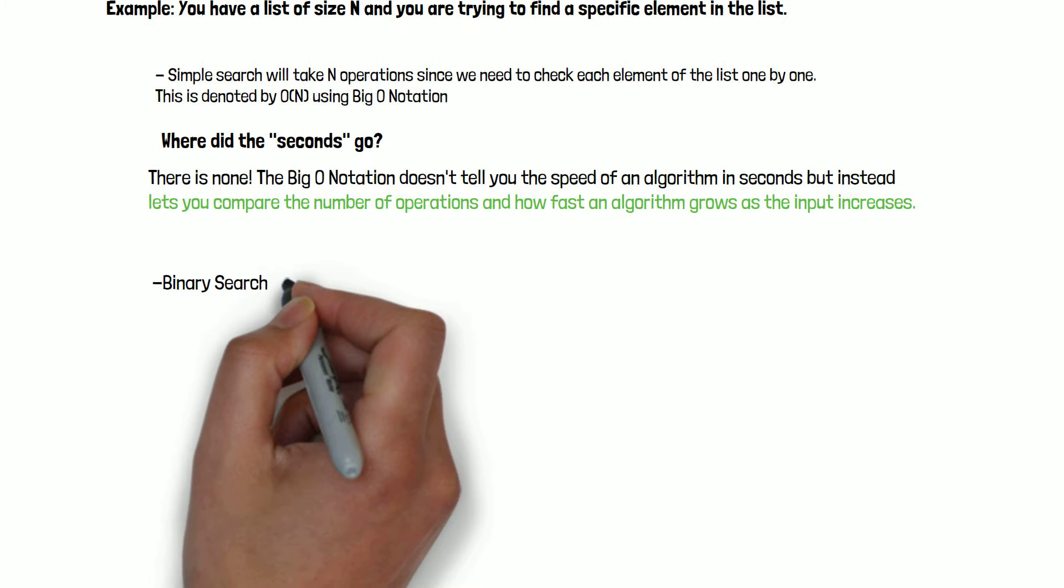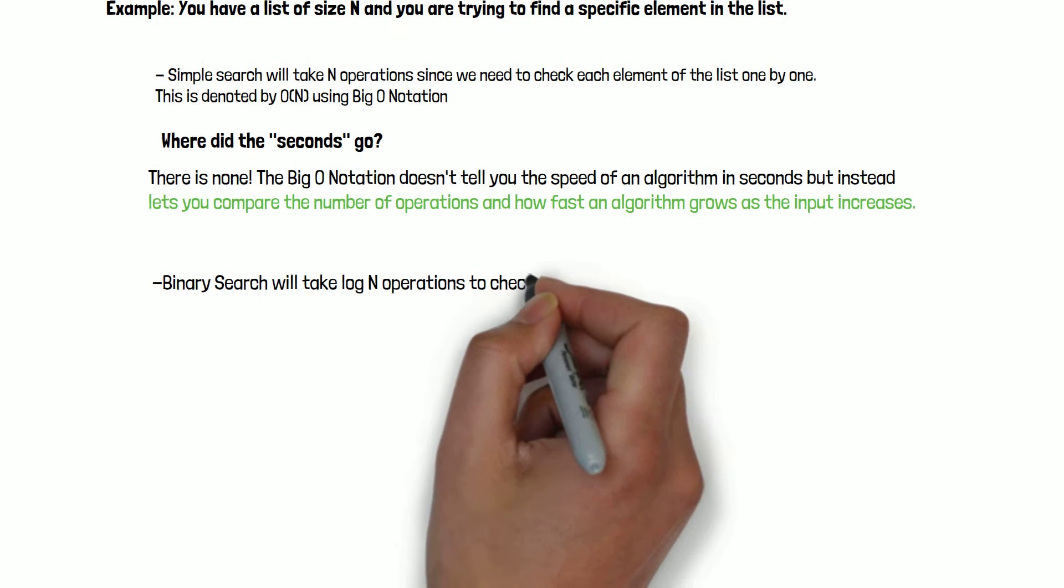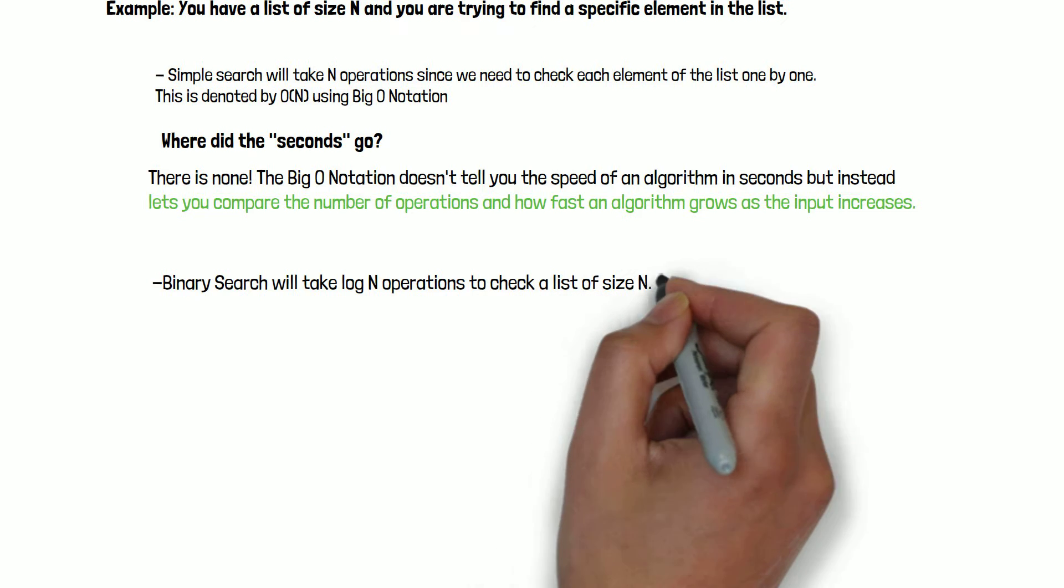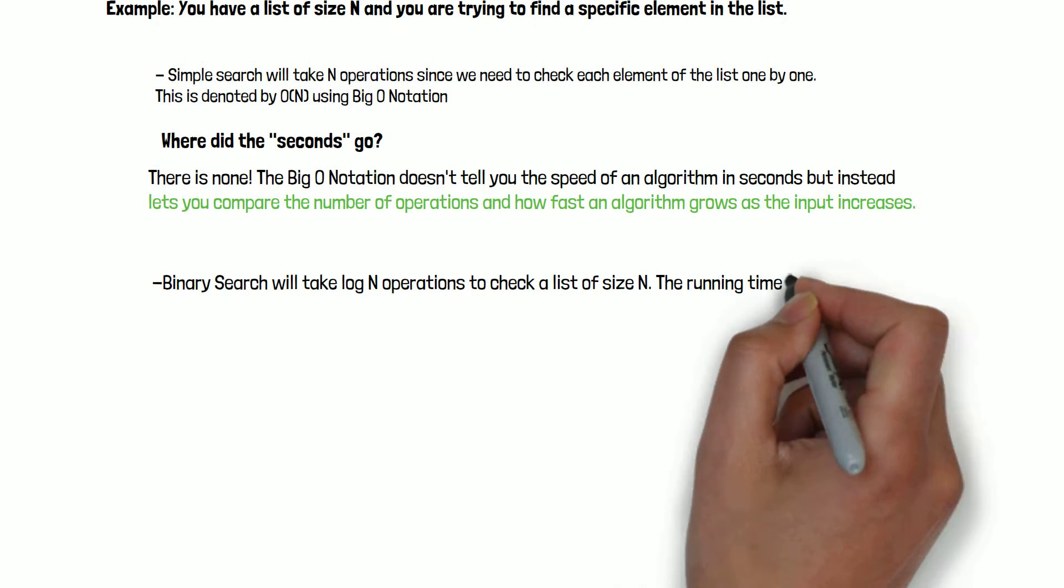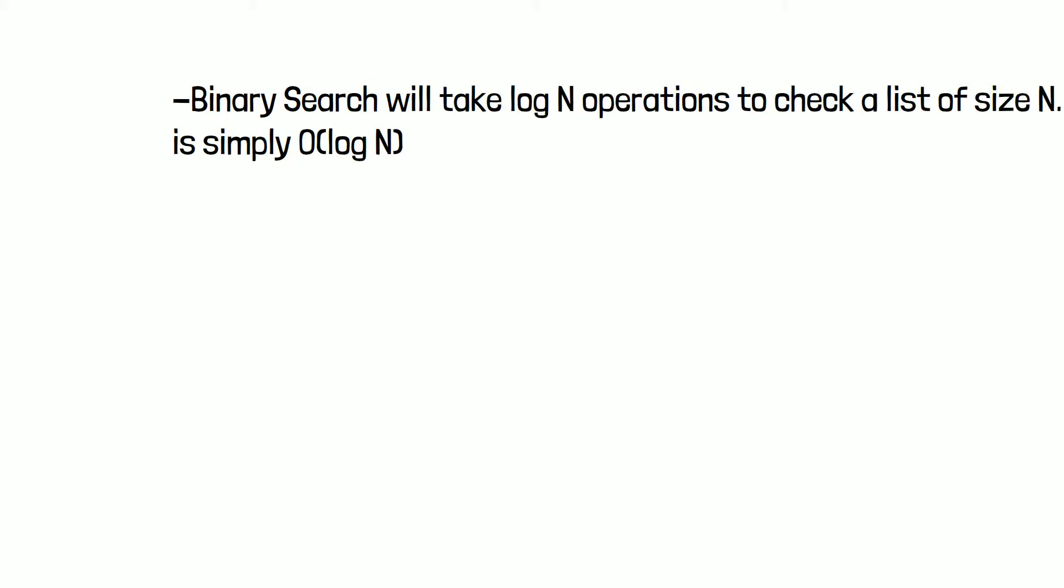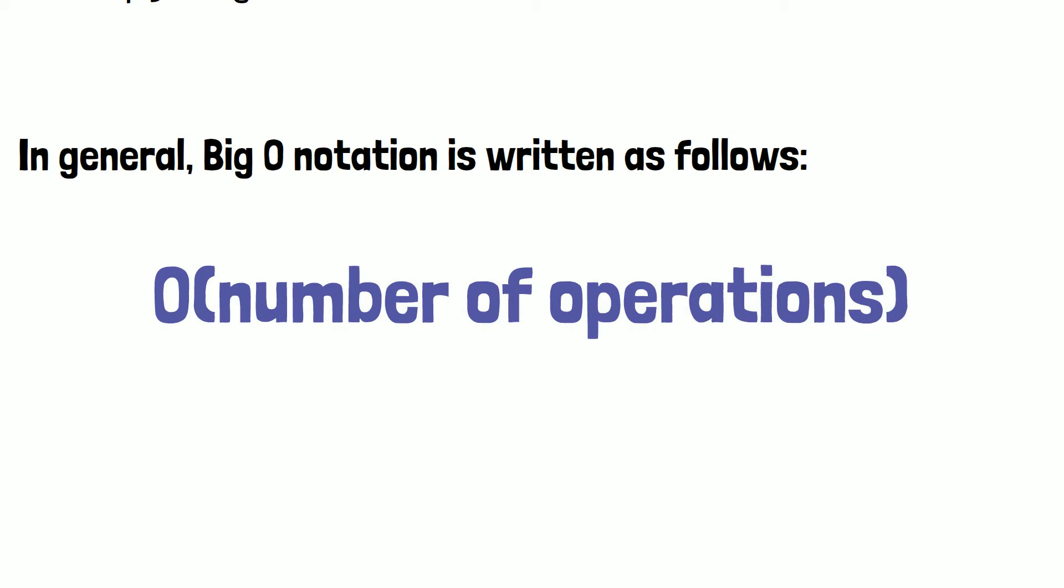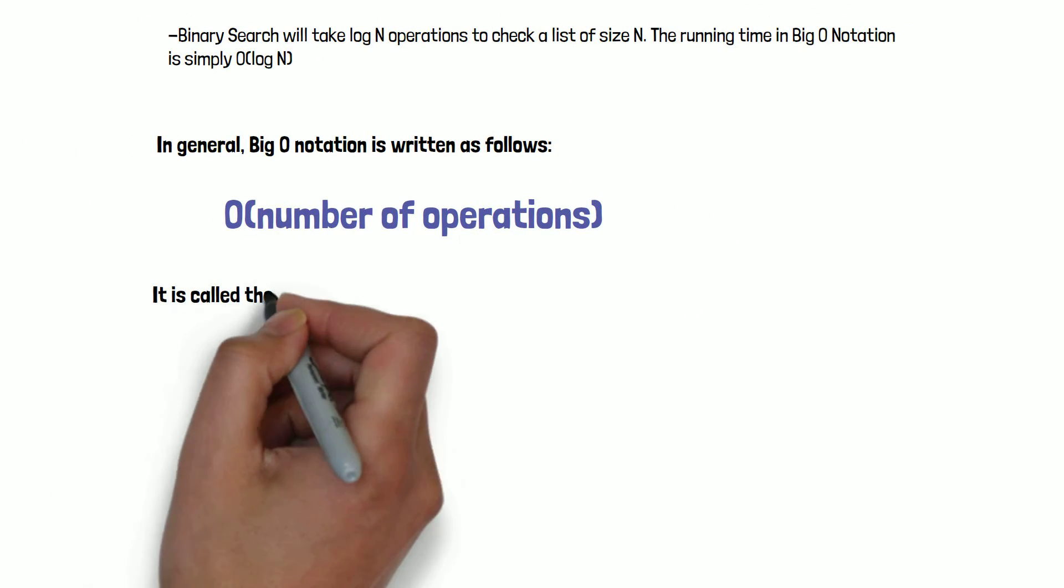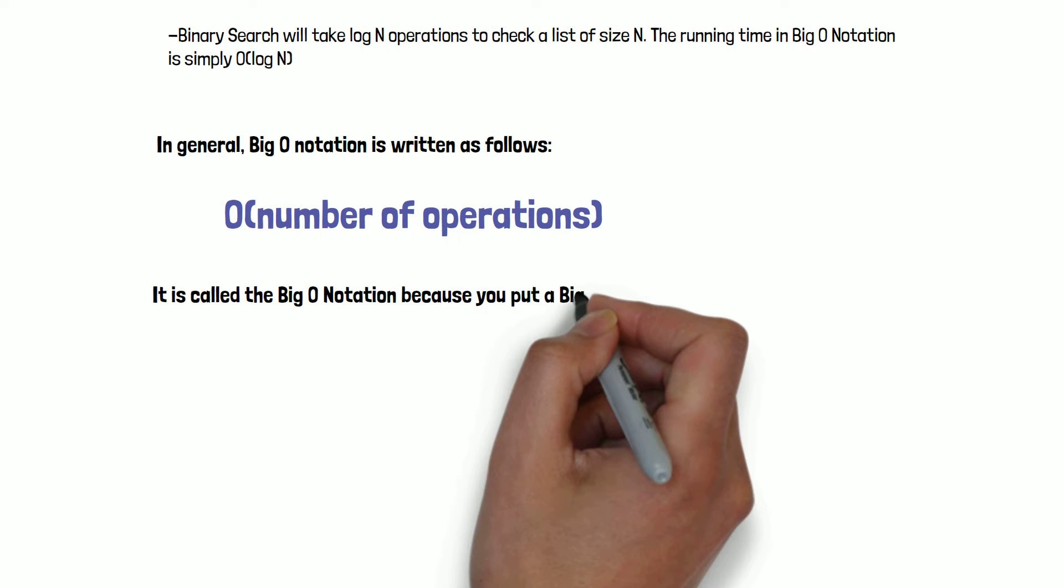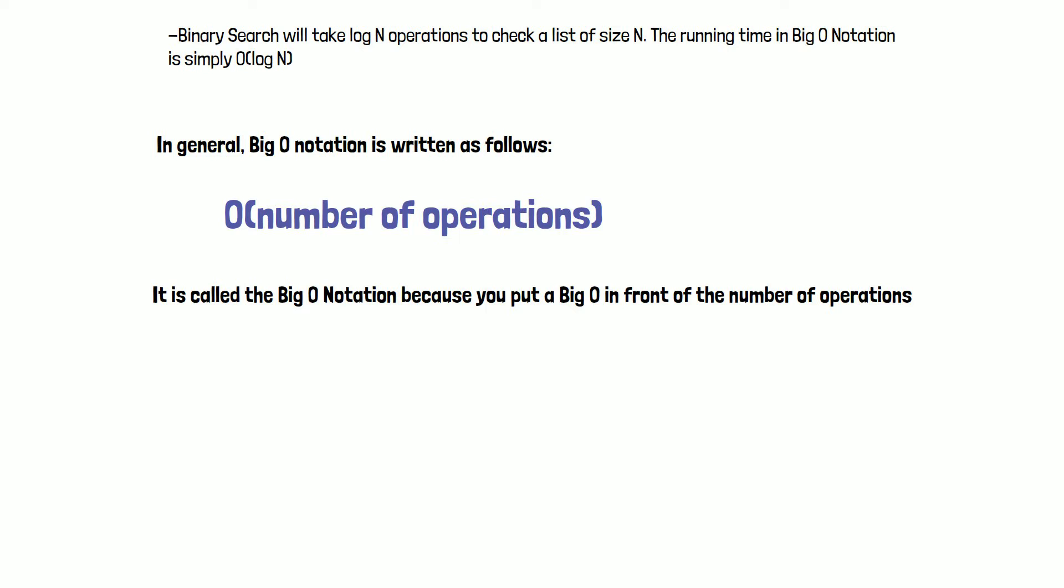Here is another example. Binary search takes log n operations to check a list of size n. What's the running time in Big O notation? Well, it is simply O(log n). In general, Big O notation is O of the number of operations. It is called Big O notation because you put a big O in front of the number of operations. It sounds really silly, but it's absolutely true.